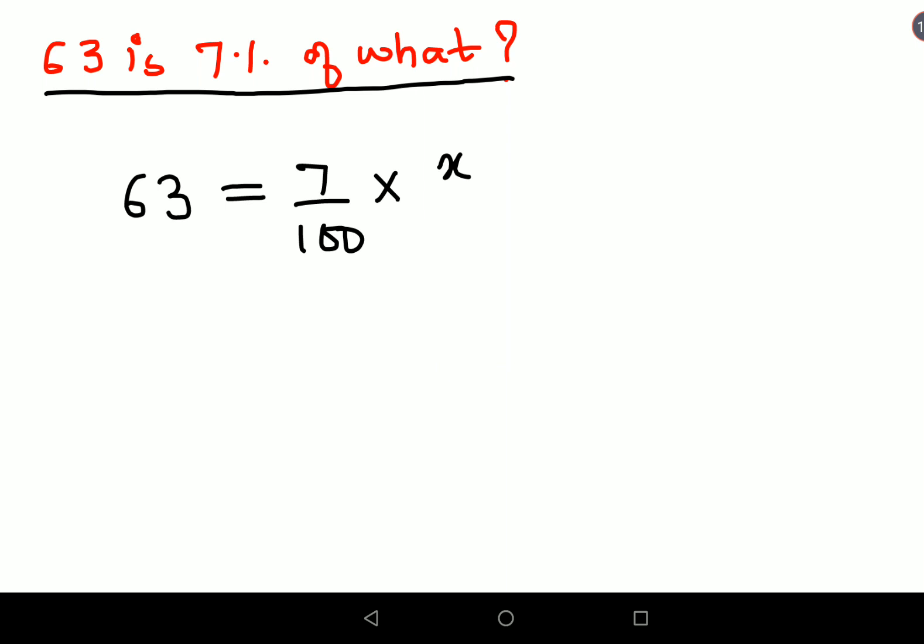In order to find the value of x, we need to keep all the variables on one side and all the numbers on another side. Since there's a 100 getting divided, we'll multiply by 100. I'm multiplying by 100 here, so obviously here also I'm multiplying by 100, and this 100 and this 100 gets cancelled.